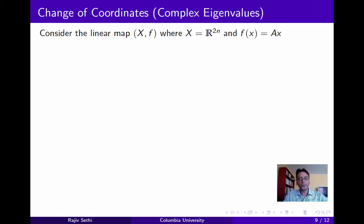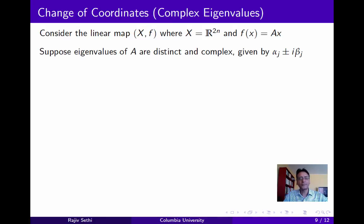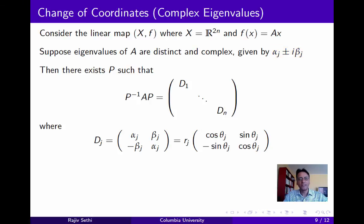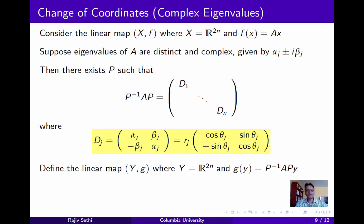Now we suppose that X is R to the 2n, and again define f(x) by a matrix Ax. Suppose that the eigenvalues of A are distinct and complex; then we know from the last segment that they arise in conjugate pairs. Let alpha_j plus or minus i beta_j denote the j-th pair of complex conjugate eigenvalues. In this case, again from the last segment, we know that there exists a matrix P such that P inverse AP is equal to a block diagonal matrix, where each block is a 2 by 2 matrix, and the j-th block is given by the matrix D_j as defined on the slide.